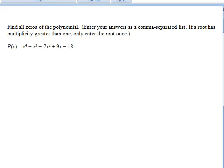Here we are asked to find all of the zeros of x to the 4th plus x cubed plus 7x squared plus 9x minus 18.